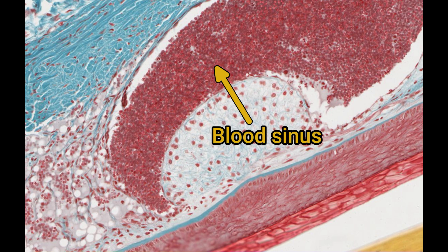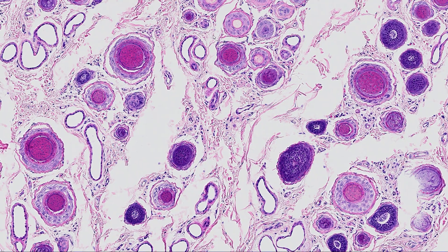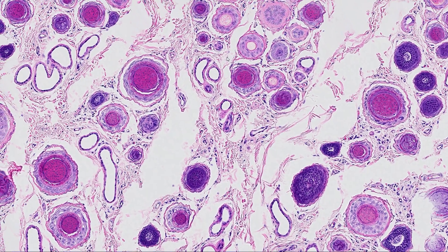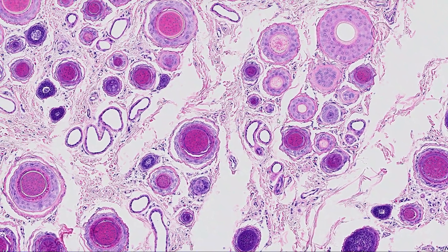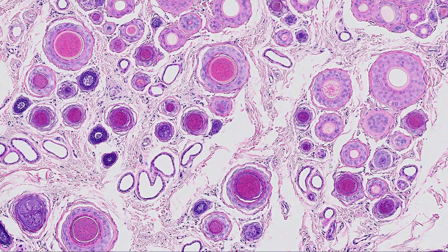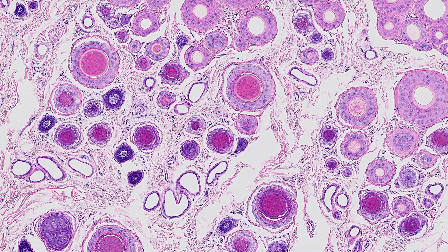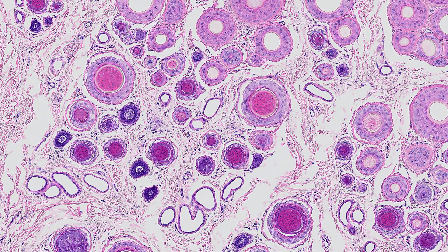Movement of the hair distorts the blood sinus, which initiates an action potential in sensory nerves. Vibrissae are extremely sensitive and often have quite a large nerve associated with them. That's everything about hair follicle histology. Thanks for making it to the end. If you have any suggestions for future topics, you can leave a comment below. Thanks for watching and until next time, goodbye.